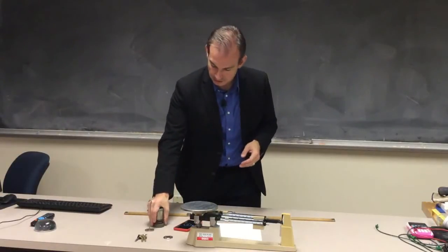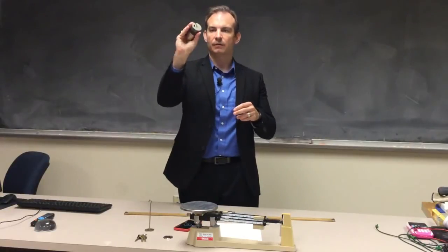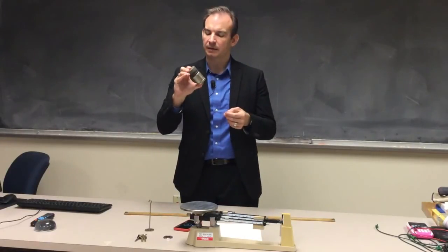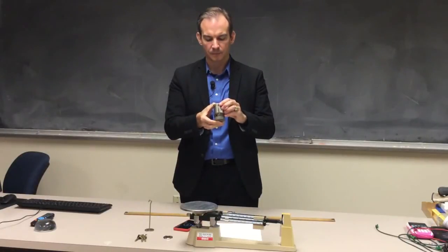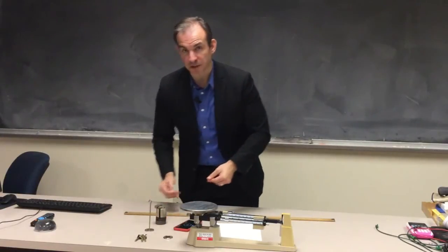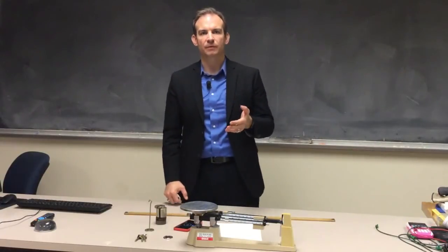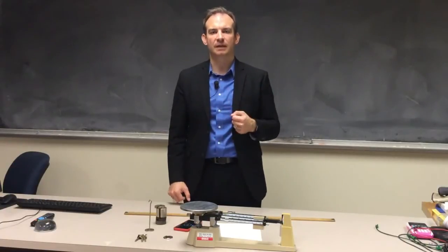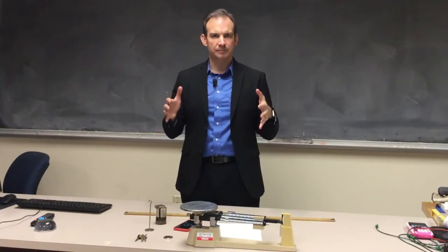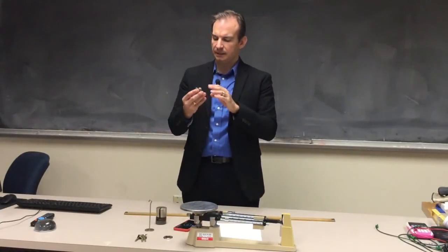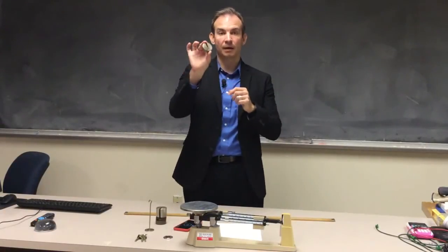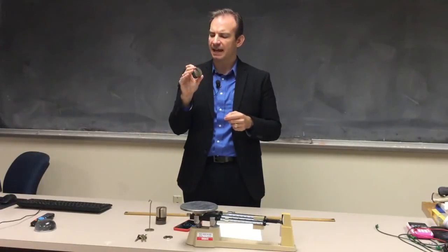All kilograms you have available — like this block of metal in my hand, supposed to represent one kilogram — would ideally have to be calibrated against that single platinum-iridium block at the International Standards Bureau. But that's not the most stable definition of mass. Atoms of platinum and iridium can be lost from that block over time, and its mass can change. Mass really is the sum total of the masses of the atoms that make up a material, and atoms can flake off without you even noticing.